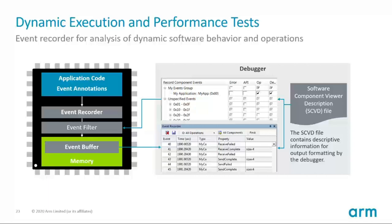Compared to printf debug style that was used previously by the customer, an event is recorded in less than a microsecond and events that are filtered out take just a few CPU cycles. Since it is safety certified you can leave it in your final production code. We initially developed this technology to analyze software stacks that are a black box to the user. Our RTOS kernel awareness works this way and all our middleware components are annotated with events. It is also easy to apply to user code to get deeper insights into the operation of your application.